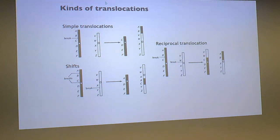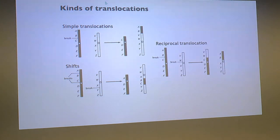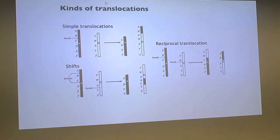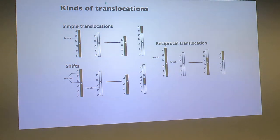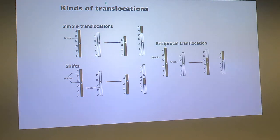Translocations can be sneaky — if the break points don't pass through any genes, you end up with a normal chromosomal complement of genes and no detectable phenotypic effect. Most of the time it doesn't do much. Many of you probably carry translocations; they're that common.